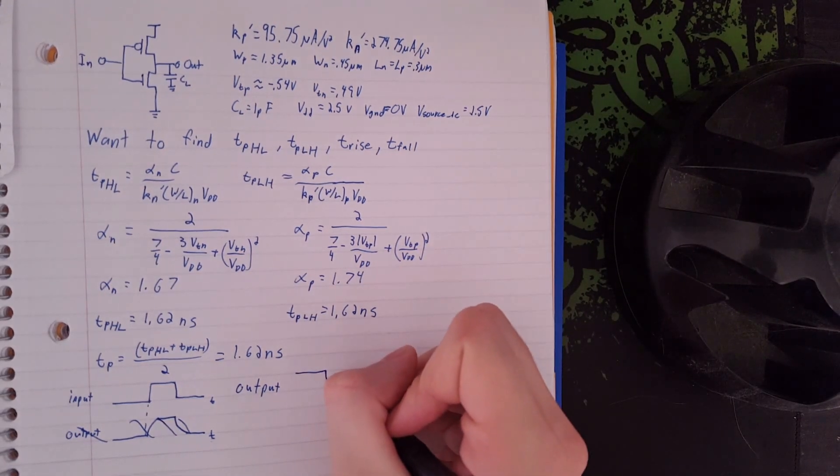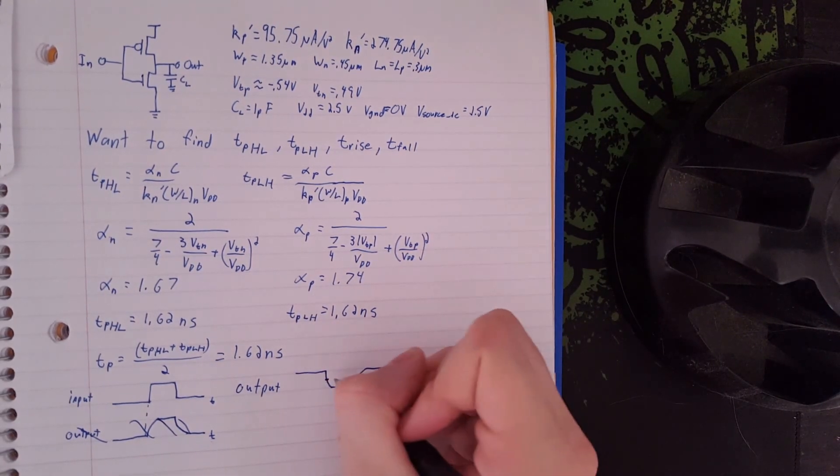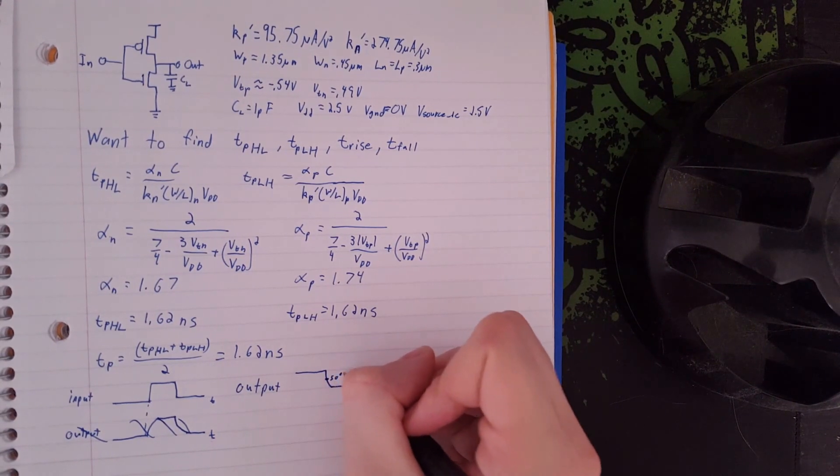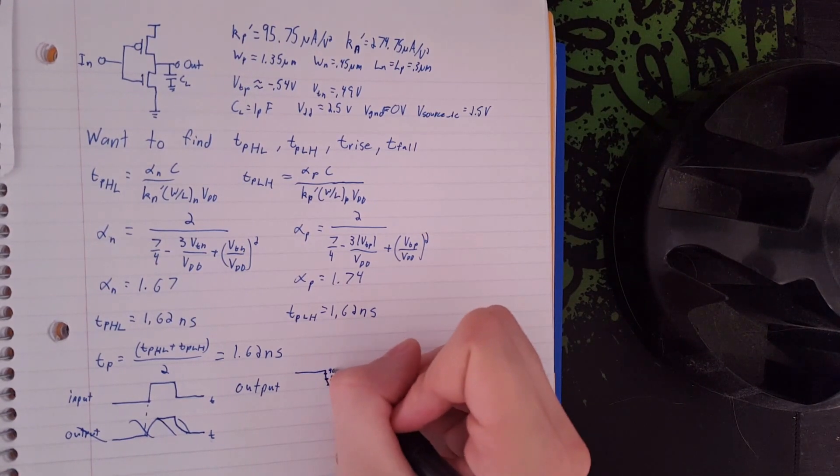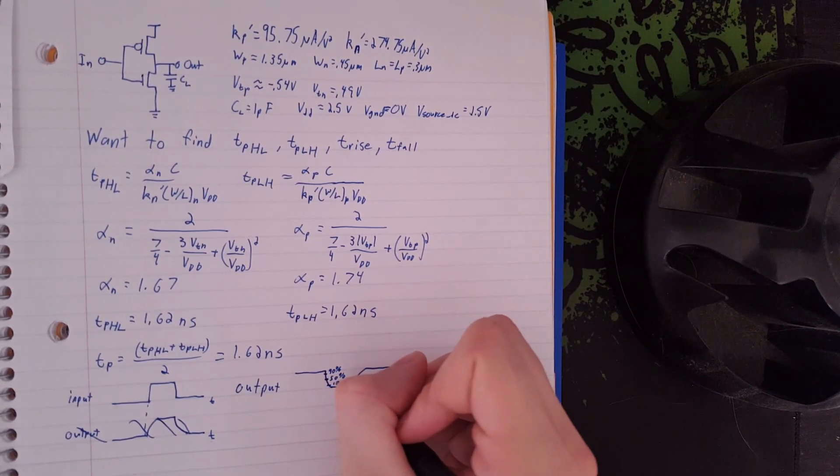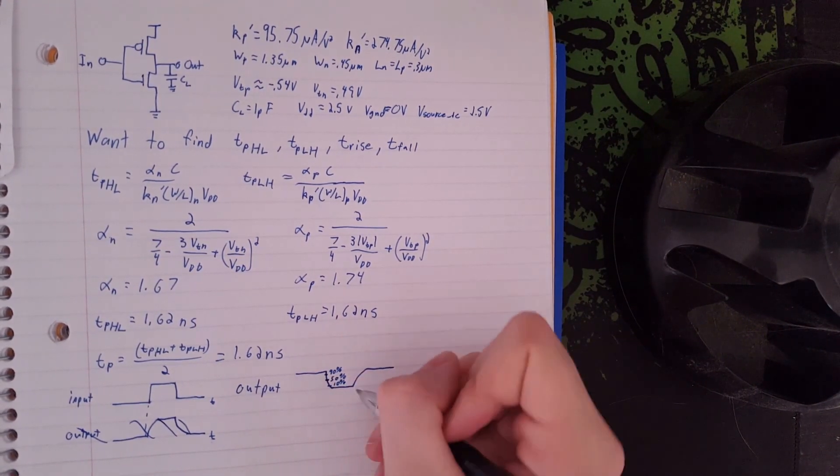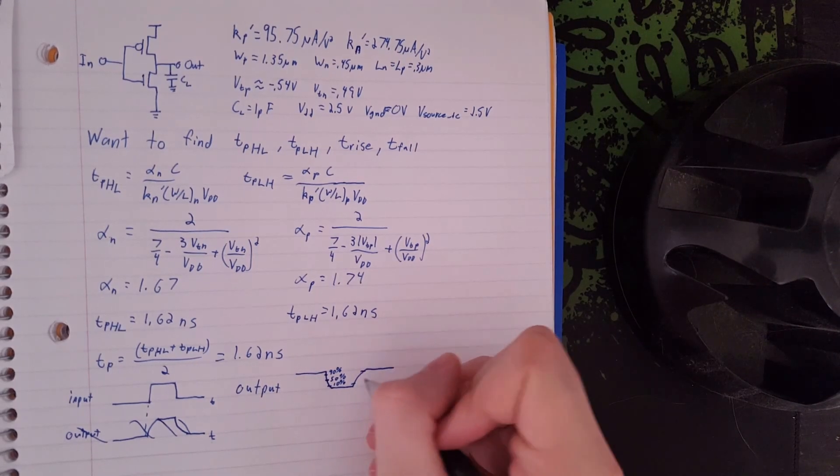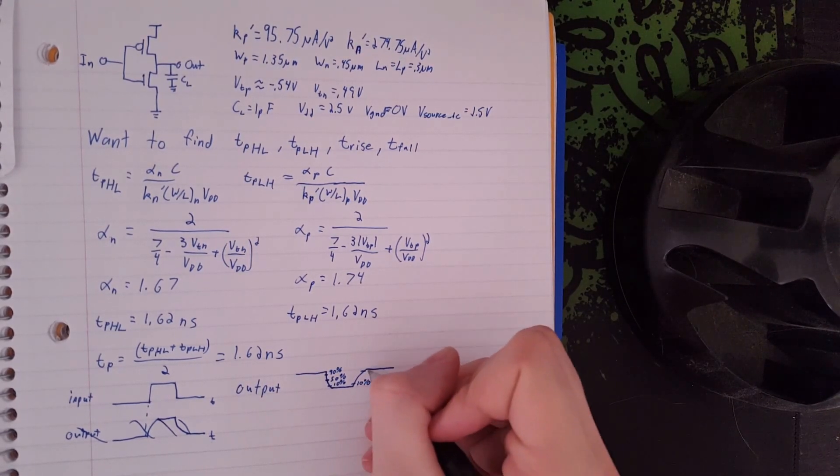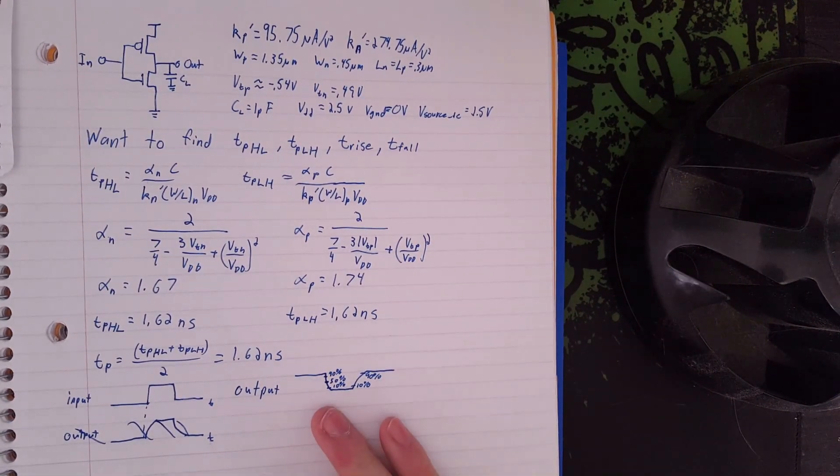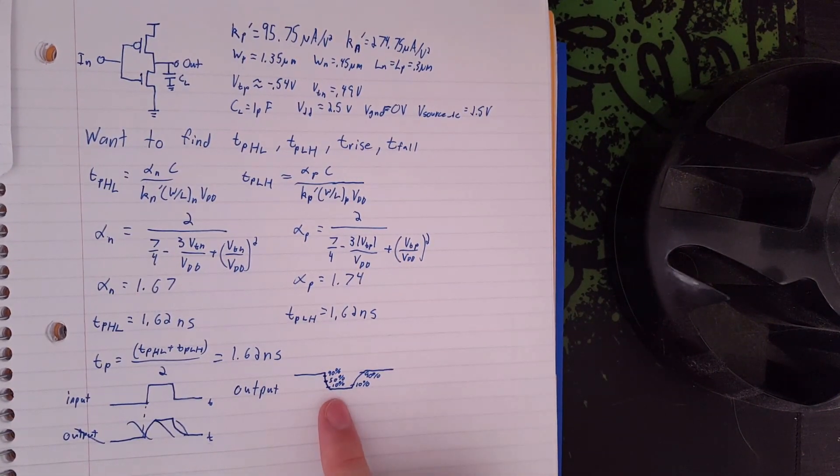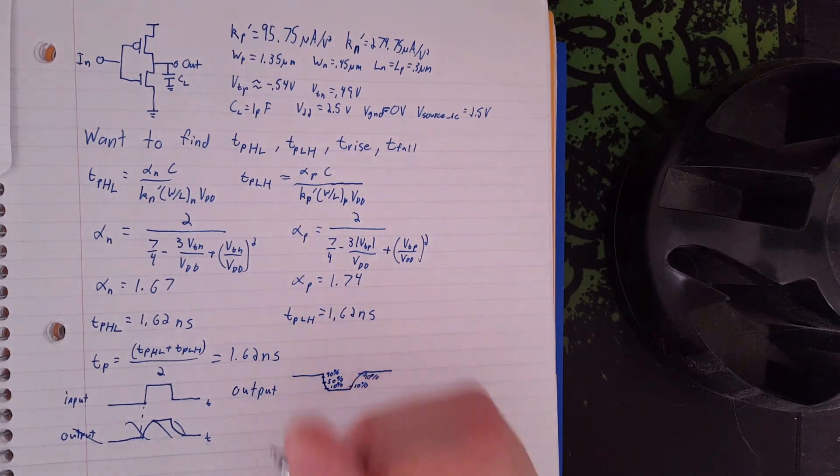It doesn't actually change how you calculate TP or rise and fall time because they're symmetrical. But the important thing for delay time is the 50% mark. When we're looking at rise and fall time, we're looking at 90% to 10% for fall time, and 10% to 90% for rise time. And how we're going to get these rise times and fall times is we're going to find the time delay of this exponential function, the tau.